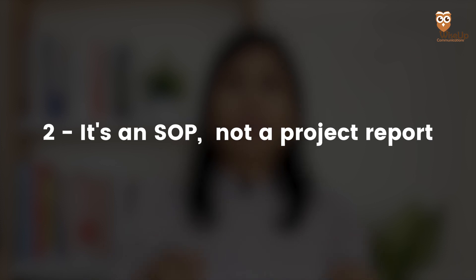The second mistake that I saw most students making was writing their projects as if it's a project report and not an SOP. Most students get so fixated on their research projects that they start explaining them in detail — the project title, what it was about, techniques used, methods used, results, and how they were successful. This looks more like an abstract of a project report rather than an SOP.